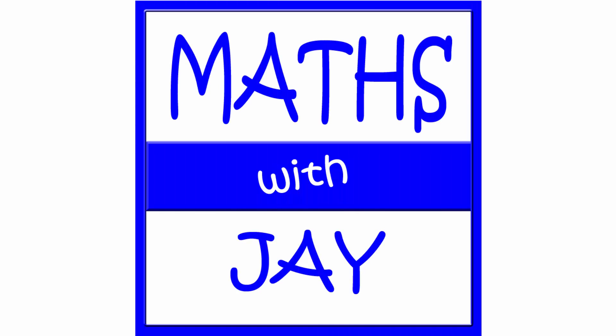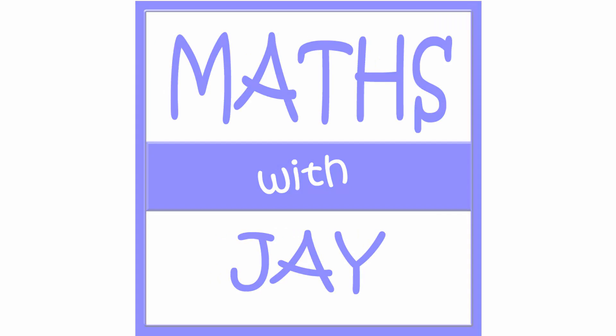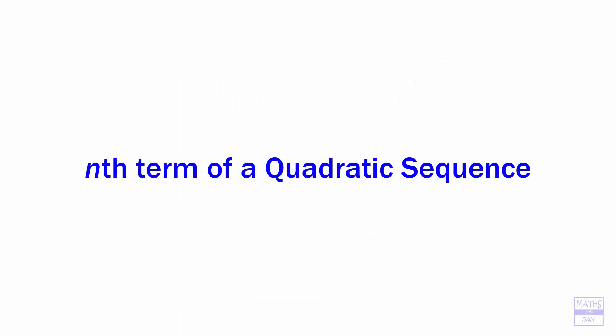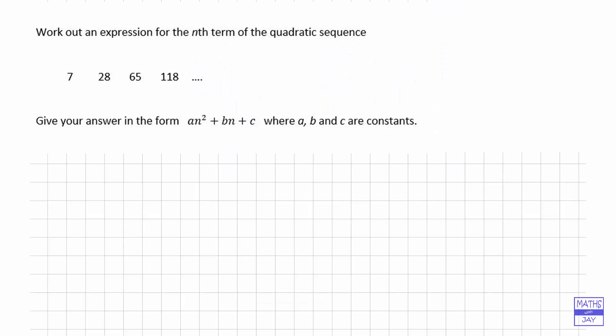Hello, welcome to Maths with Jay. We've been given the first four terms of a quadratic sequence and we're going to work out how to write down the nth term in the form an² + bn + c.